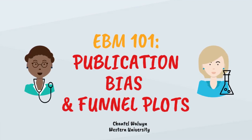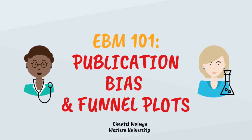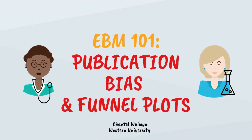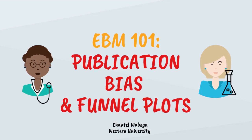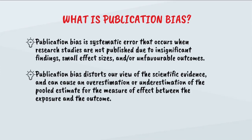Hi, my name is Chantal Walwyn and I'm a student at Western University. Today I'll be giving a brief overview of publication bias. Publication bias is a systematic error that occurs when research studies are not published due to insignificant findings, small effect sizes, or unfavorable outcomes.